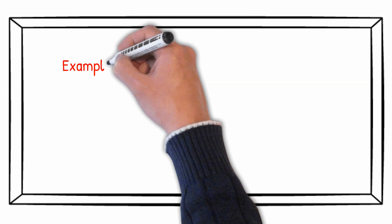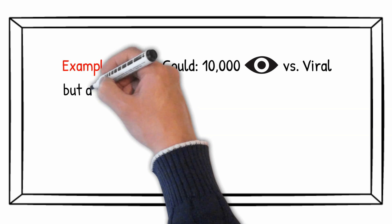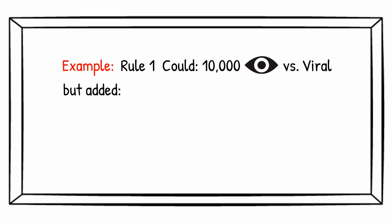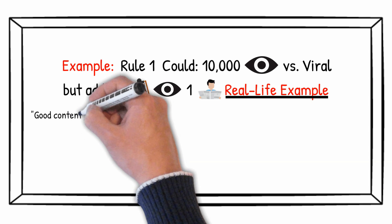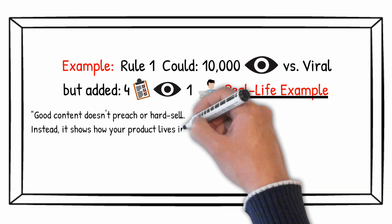When talking about the first rule in this summary, I could have left it at the explanation of putting a precise goal of 10,000 views versus the unclear goal of a video going viral. But instead, I also mentioned the four visitors and one subscriber goal that I've set. This is real life application instead of just a theoretic explanation. In Chapley's words, good content doesn't preach or hard sell. Instead, it shows how your product lives in the real world.